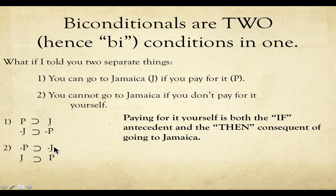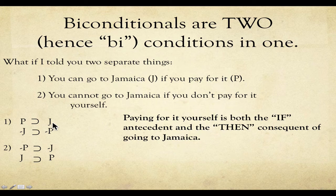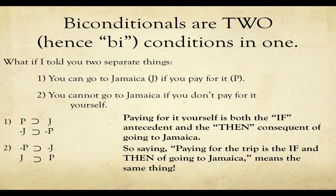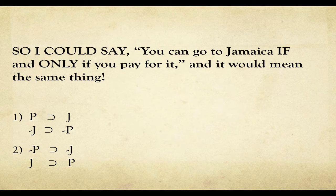So paying for it is both the antecedent and the consequent of going to Jamaica. Paying is an antecedent in one statement, and paying for it is the consequent in the other, with Jamaica on the opposite side in both examples. Two statements — one that makes paying the antecedent for going to Jamaica, and one that makes paying the consequent — makes this biconditional.